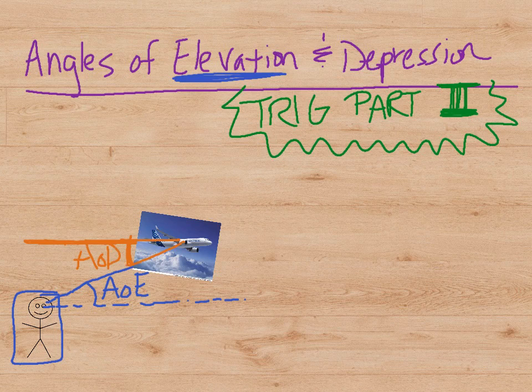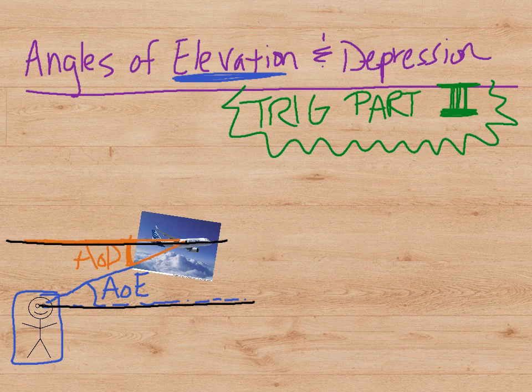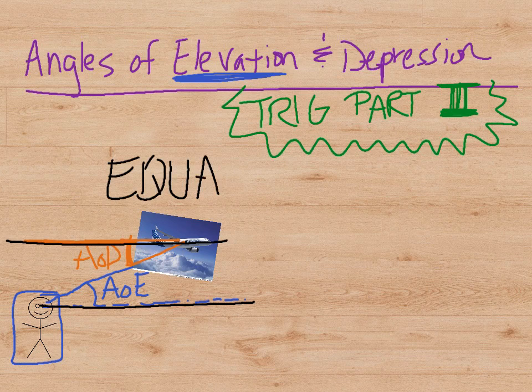Do you notice anything exciting about this? Hopefully you're seeing that there are parallel lines. We got parallel lines. So the vision of you and the vision of the person on the airplane is parallel, which makes the angle of depression and the angle of elevation equal. That's the question to the first fill in the blank - the angle of depression and the angle of elevation is exactly the same because it's alternate interior angles.